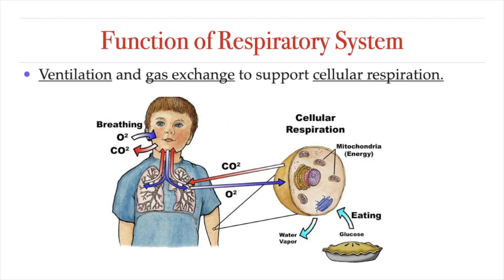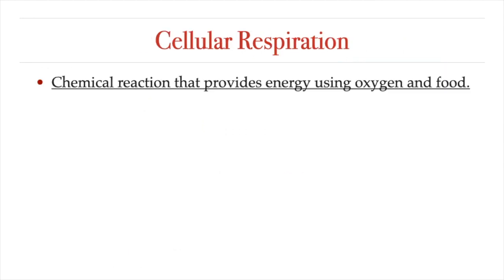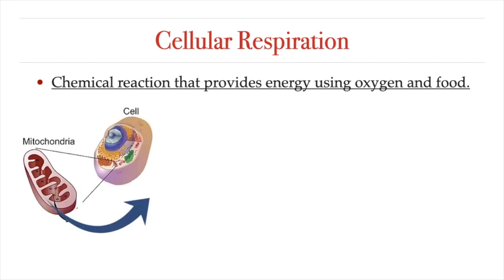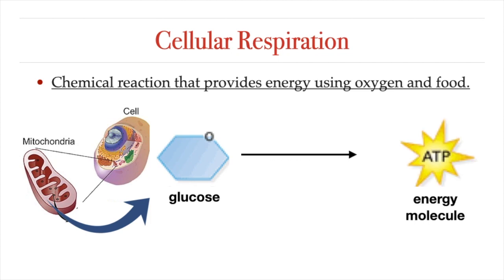Which brings us to the final piece of the puzzle: the whole reason for this gas exchange, which is a process called cellular respiration. Cellular respiration is a group of chemical reactions that takes place mostly in the mitochondria of cells. During cellular respiration, cells convert energy found in food molecules, for example glucose, into a form the cells can use. This form is a molecule called ATP.